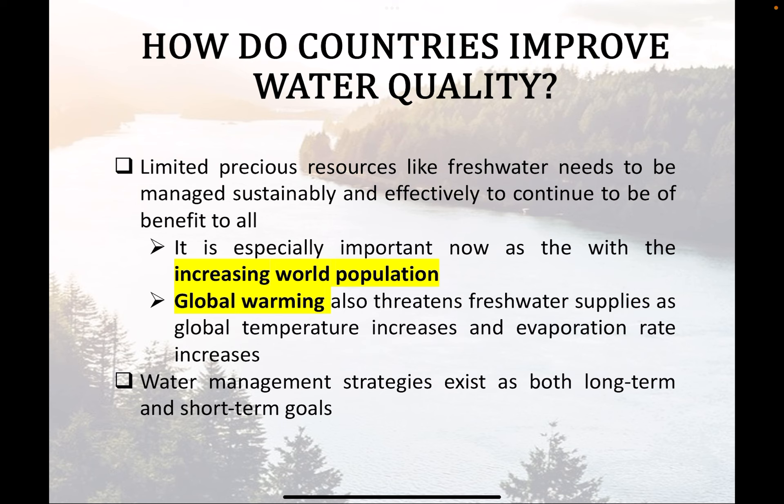Two very big problems are facing humanity now: the ever-increasing world population — we're almost at 8 billion, which is a very large number — and also global warming, which is very real. These two things together are applying very strong pressure on how we can manage water. Some strategies, both long and short term, need to work together to ensure continued availability of water.